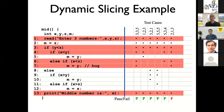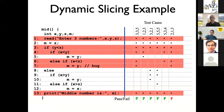Is this much better than static slicing? Clearly it's better — there are many fewer statements reported. But think about it — the starting point is an execution, so the baseline is the trace, and you'll never look at statements that were never executed. It doesn't help that much either, because for this specific example you're only skipping one statement. It's a little more focused than static slicing, but still fairly imprecise.